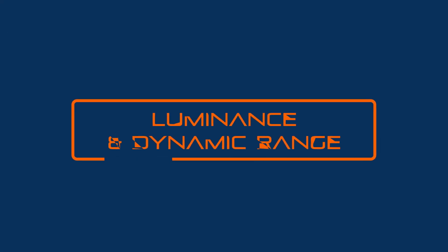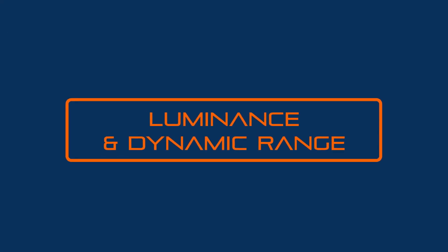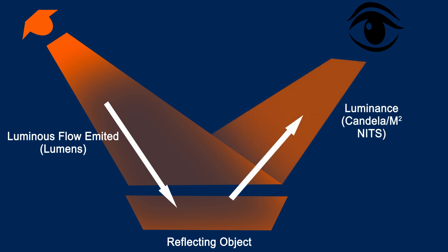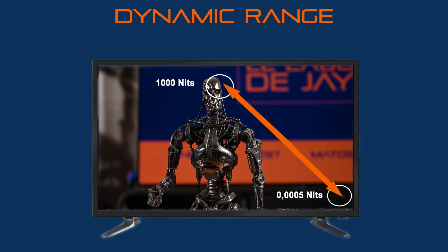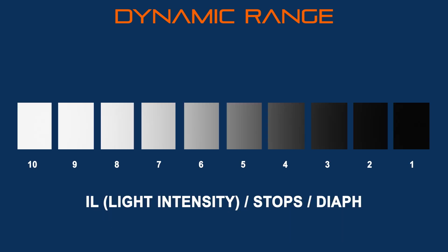The two first concepts are luminance and dynamic range. The luminance is the quantity of light an object can emit, measured in candela per square meters or in nits. The dynamic range measures the difference between the darkest and the brightest value of an image. This gap is measured in light intensity, in stops or in depth, and is used in many different ways.